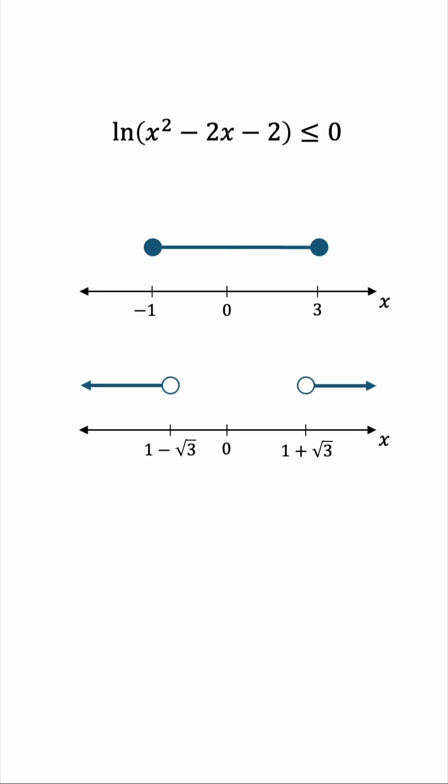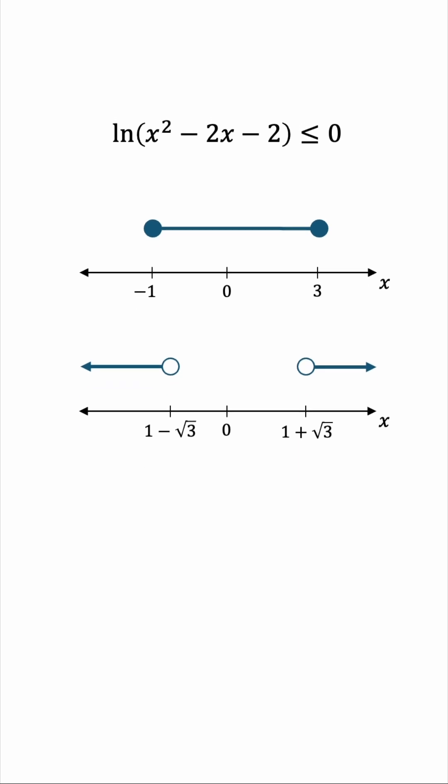And now it's a question of, where do those regions intersect? Take a close look and verify that this is the region of intersection. So x must lie between -1 and 1 - √3, or between 1 + √3 and 3.